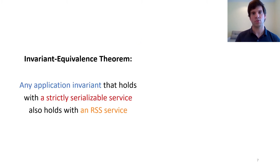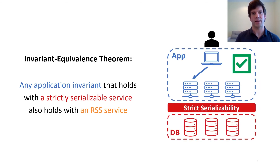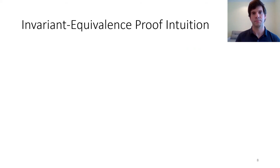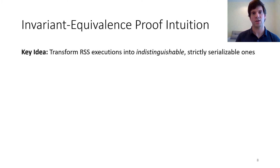Informally, our invariant equivalence theorem states that any application invariant that holds while an application runs on a strictly serializable service will also hold while the same application runs on an RSS service. This means that if I build a correct application using a strictly serializable database, and then swap the database out for one that guarantees RSS, the application will still be correct. The key idea in our proof is that we can transform any RSS execution into one that satisfies strict serializability, and importantly, the two executions will be indistinguishable to the application processes.